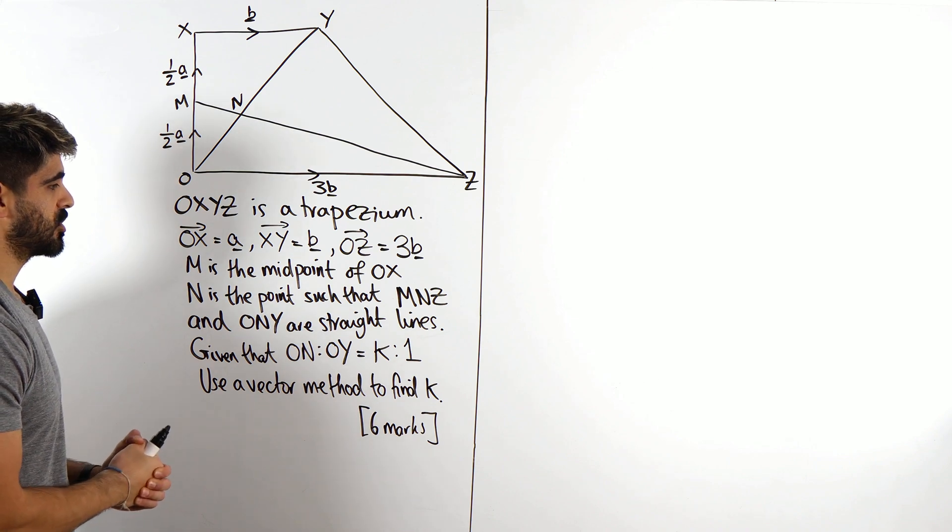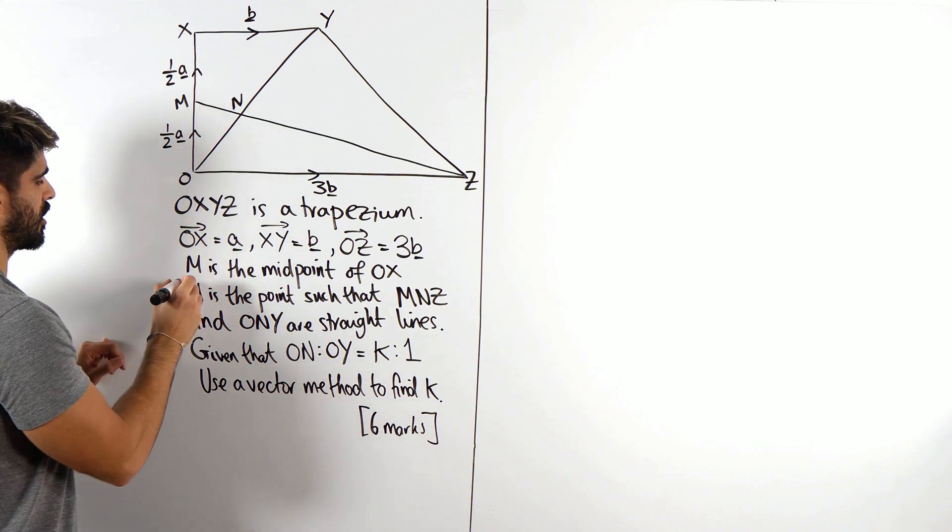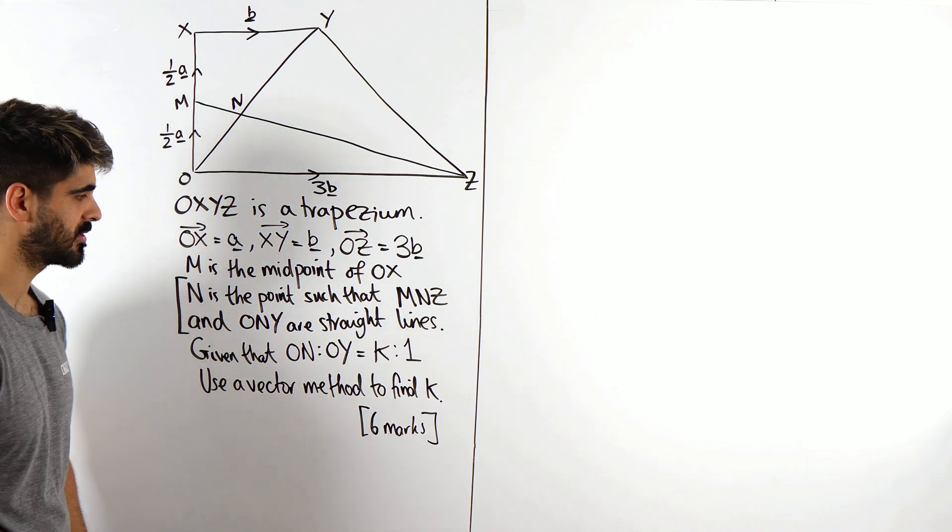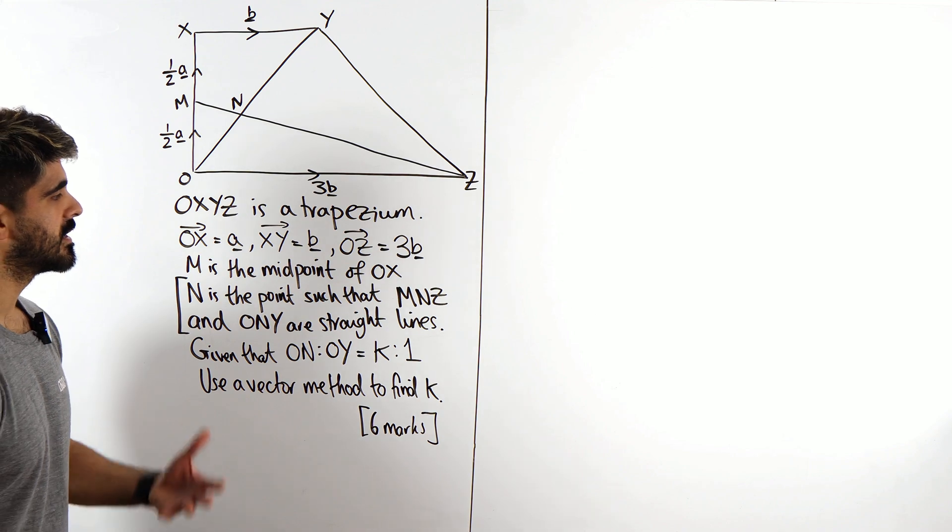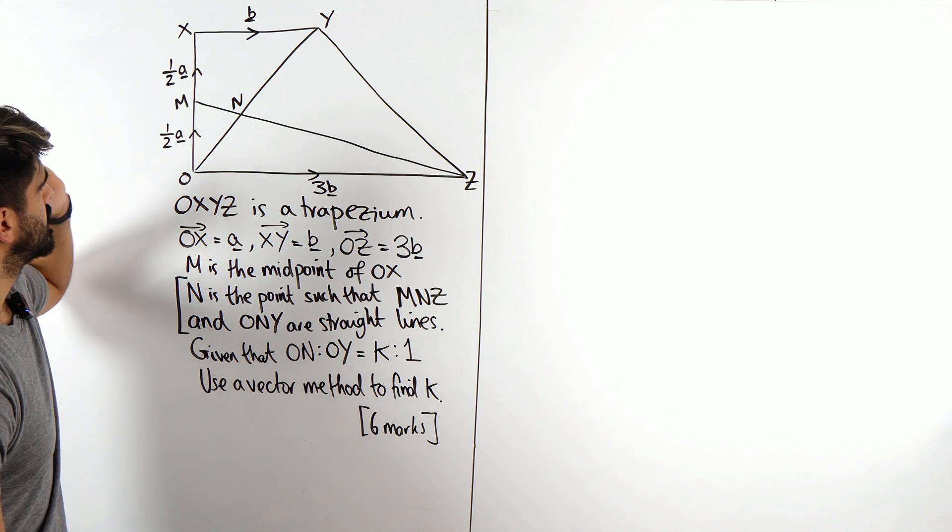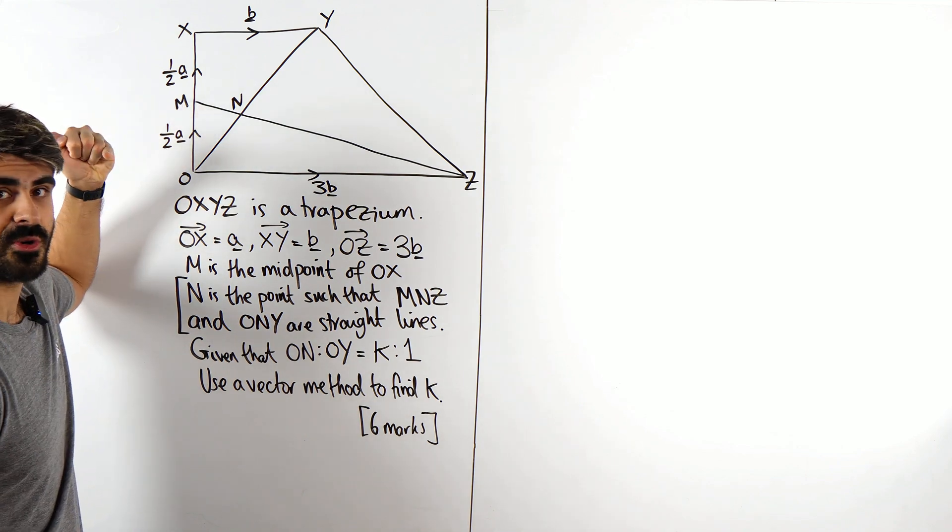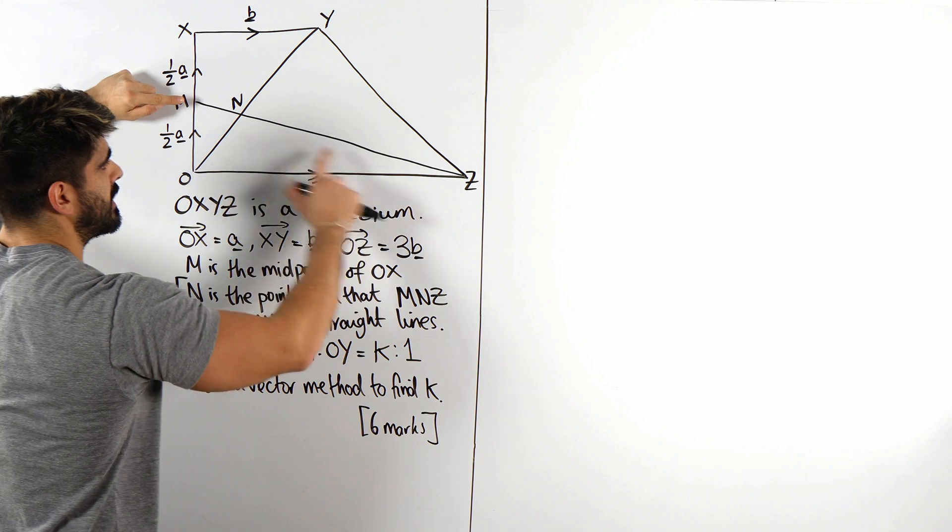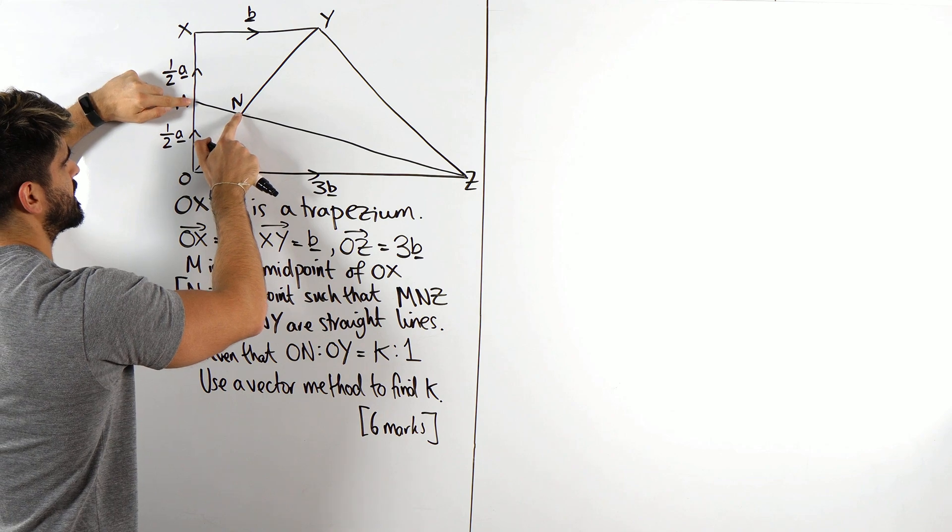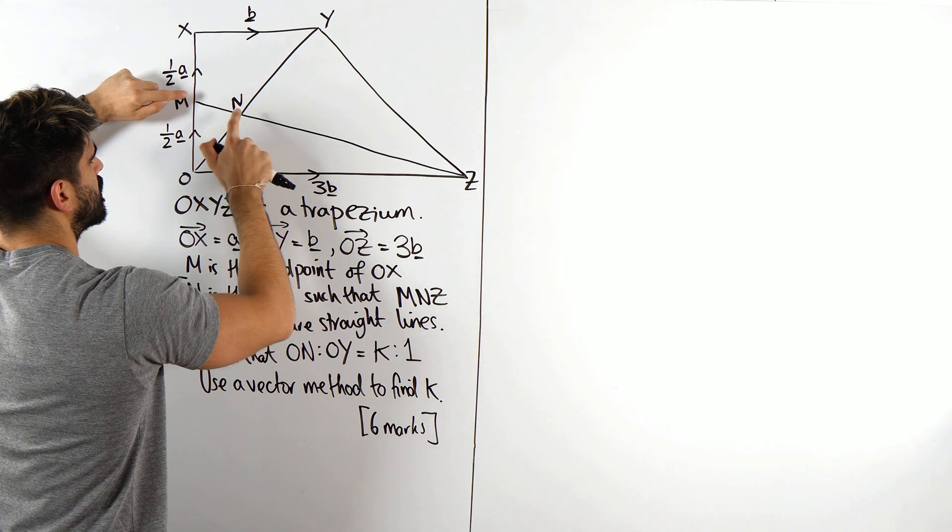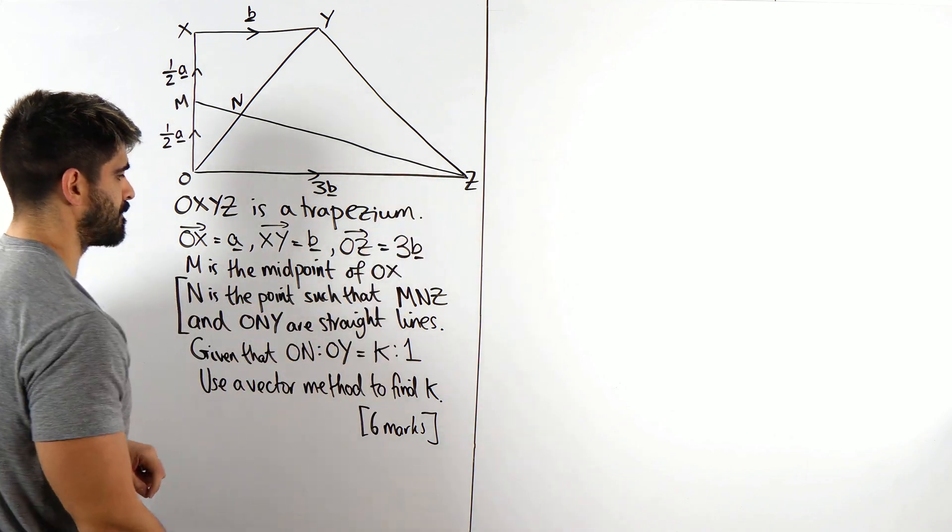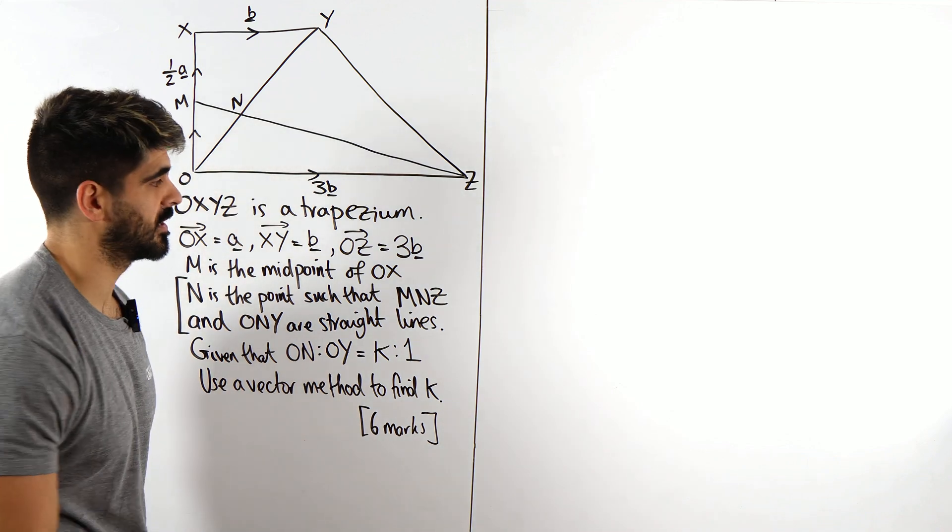Now, with all of these questions, we're always going to start off with this section, this straight line business. Because what does that even mean that something is a straight line? It means if you take a point, we usually always pick the endpoints. If MNZ is a straight line, it means MN is a multiple of MZ. Or MN, if you times it by something, it will give you MZ. And that's what I'm going to write down first.